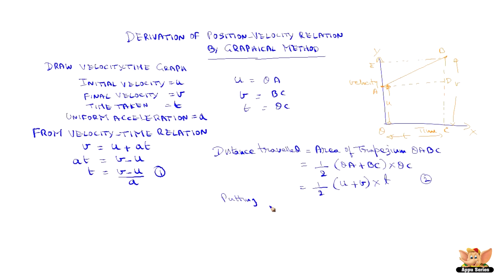Putting equation 1 in equation 2, we get distance travelled s is equal to half into u plus v into v minus u by a which is v square minus u square by 2a.